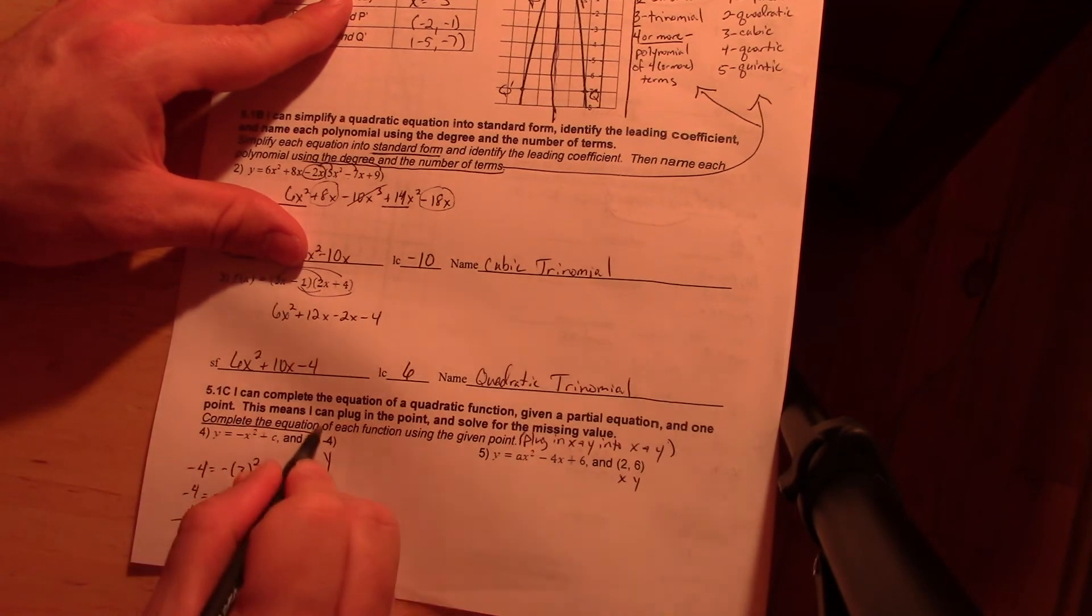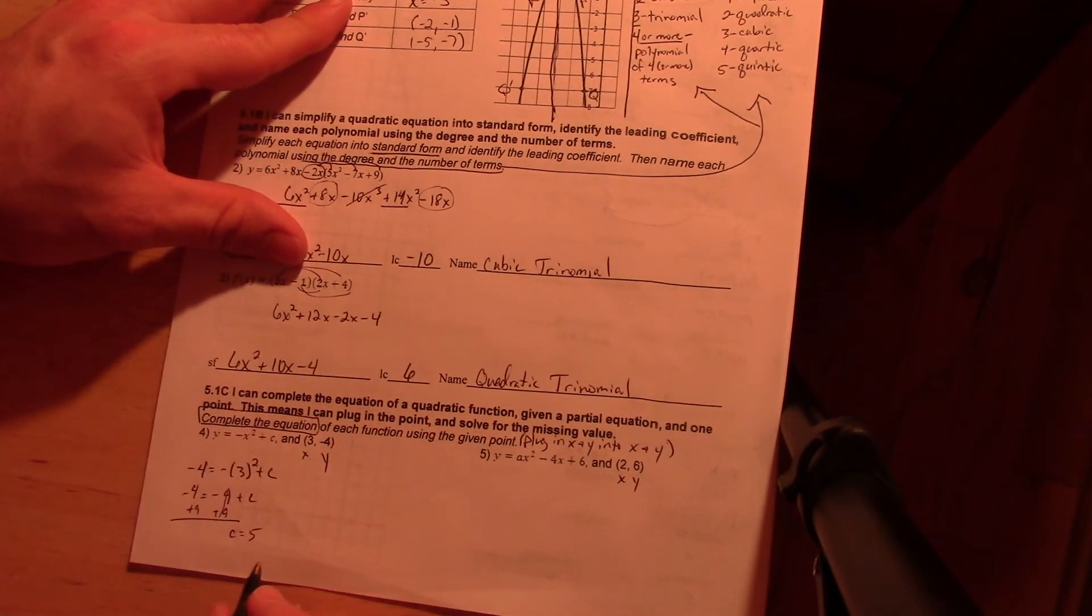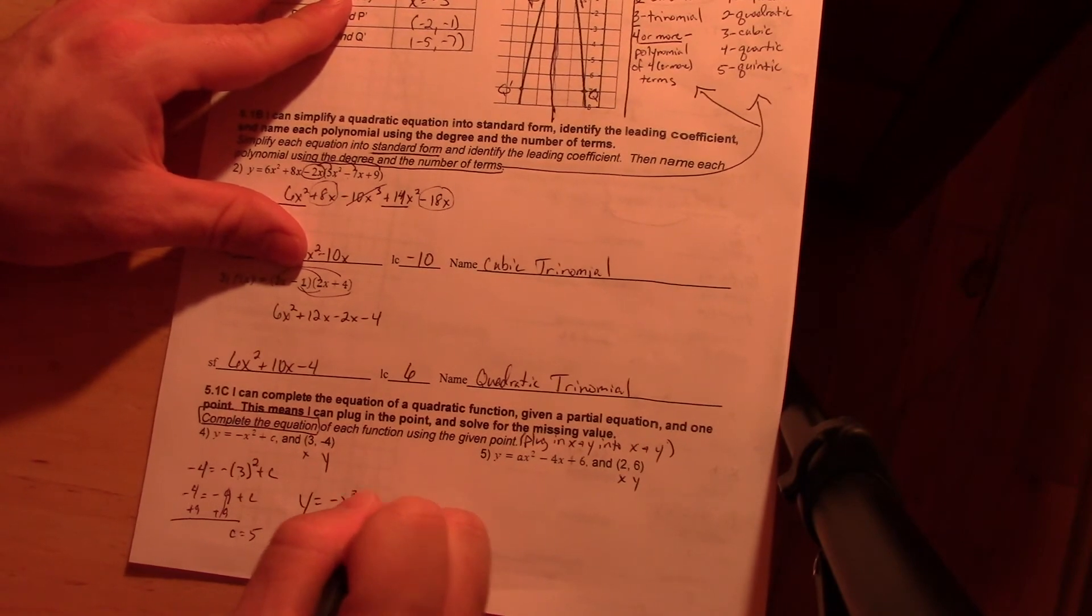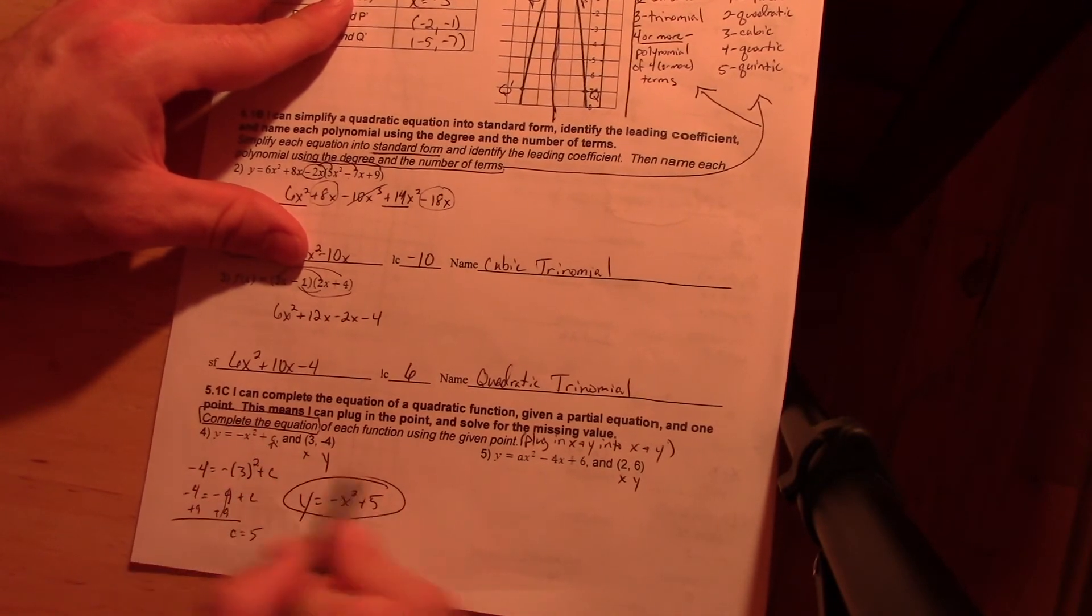But again it says complete the equation. I'm going to put a box around that because it's significant. Because the answer is negative x squared plus five. You're plugging it in for that one here.